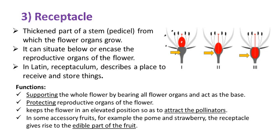The receptacle is the thickened part of a stem or the pedicel from which the flower organs grow. It can situate below or encase the reproductive organs of the flower. In Latin, receptaculum describes a place to receive and store things. The receptacle supports the whole flower by bearing all flower organs, acts as the base, protects reproductive organs, and keeps the flower in an elevated position to attract pollinators. In some accessory fruits, for example the palm and strawberry, the receptacle gives rise to the edible part of the fruit.